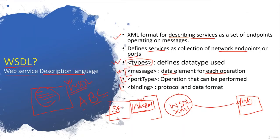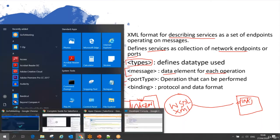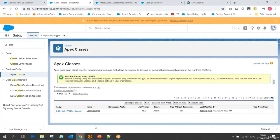So we'll see how to get the WSDL for the Apex class we have written. Simply put, WSDL is the Web Service Description Language which defines your web service - what kind of services, what is the request, what is the response format, how the services can be communicated, and where the service is - everything defined in XML format, which can be easily understood by any system.